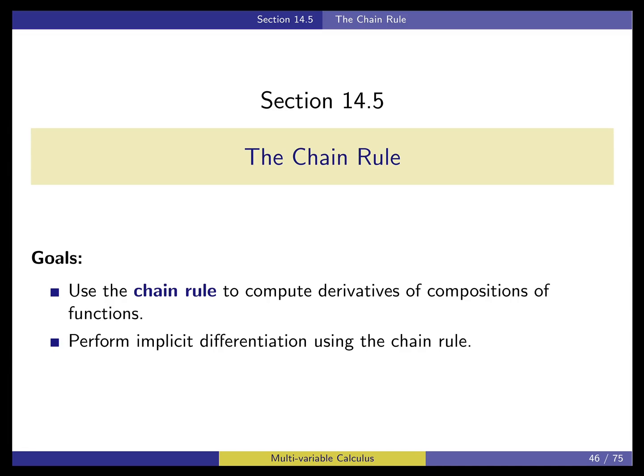This is section 14.5. It covers the chain rule. The chain rule is going to answer our question of how to understand the derivative of a function if more than one of the variables is perhaps changing at a time. It's also going to give us a great trick for doing implicit differentiation of a two-variable function, which is something you did in Calculus 1.